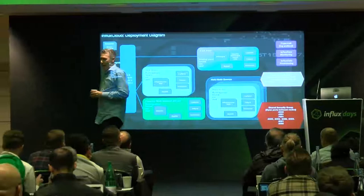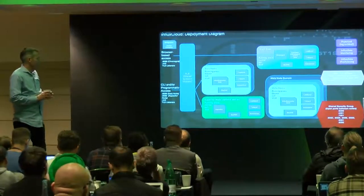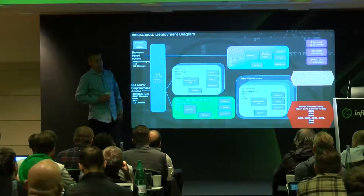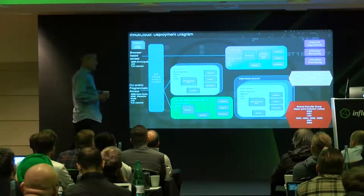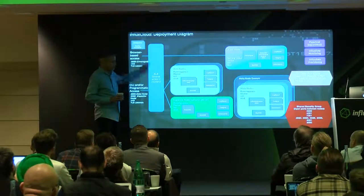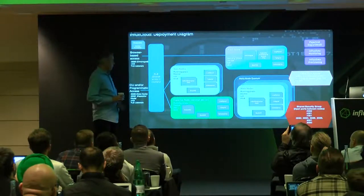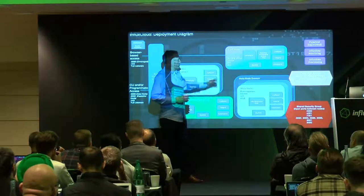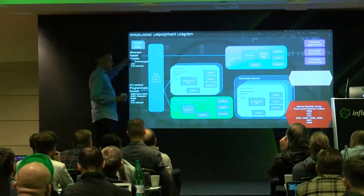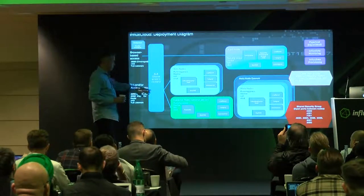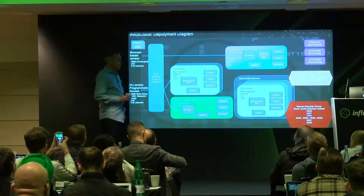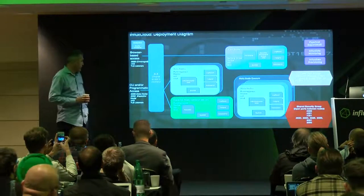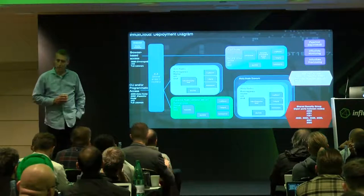The deployment diagram on an instance-by-instance basis starts with an ALB within the AWS environment. We have multiple ALBs per region — up to 90 clusters are routed through a single ALB per region. We have the coach node — Kapacitor and Chronograf — running and exposed through the front door, so browser-based access to Chronograf is done through the ALB. CLI and programmatic access are also through the ALB but on a different port. Meta node quorum runs in the background, data nodes are there, and the security setup is configured.